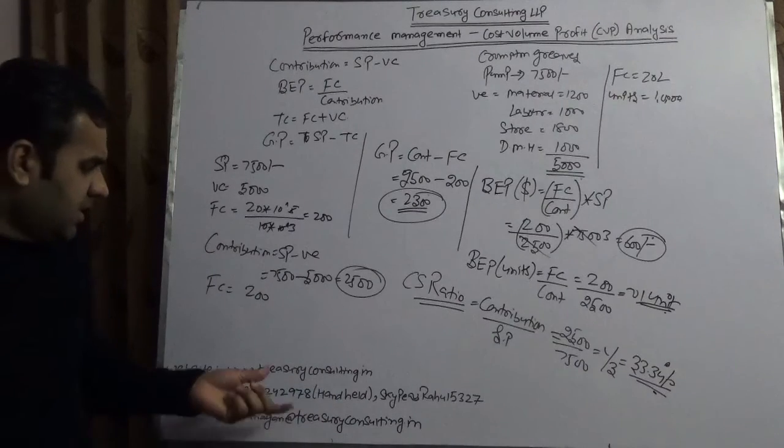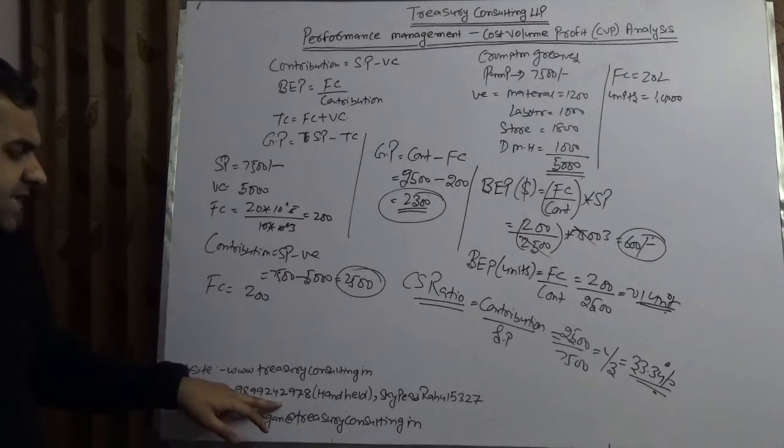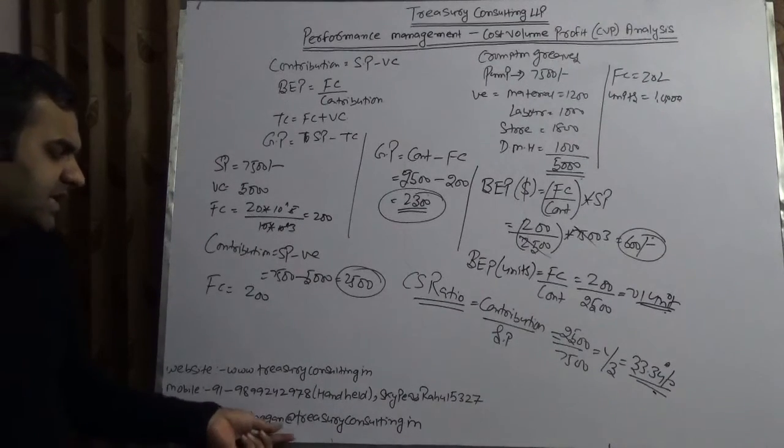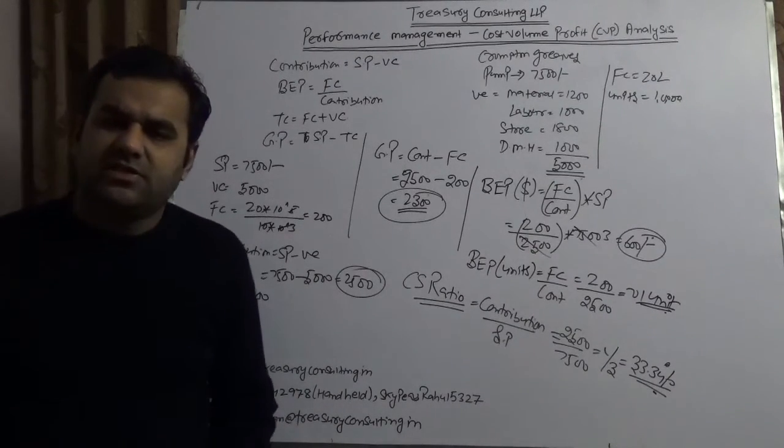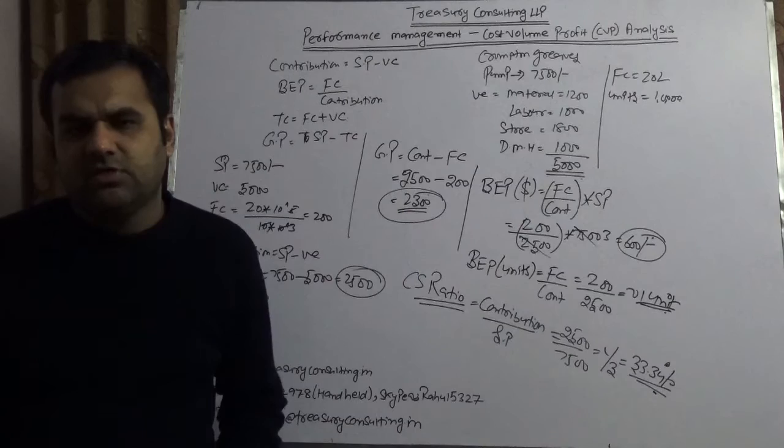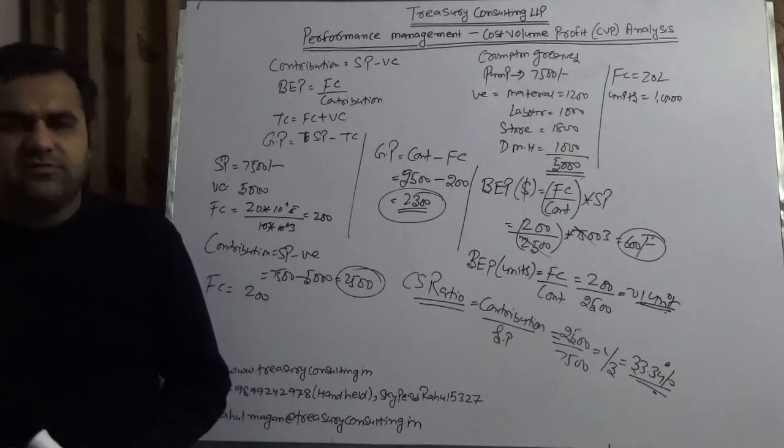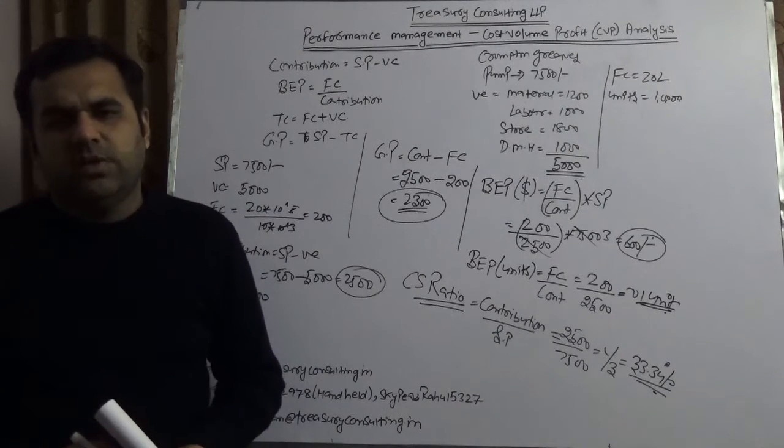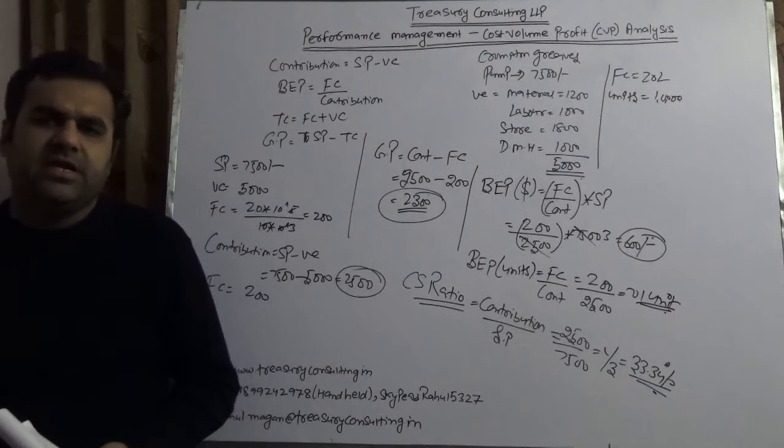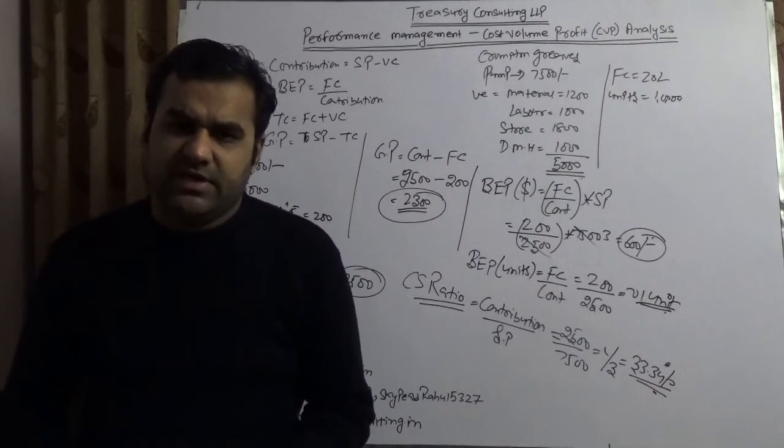Hope you like this video. Our website is www.treasuryconsulting.in. Our mobile number is 9899242978 and my Skype ID is rahul5327. My email is rahul.magan@treasuryconsulting.in. You are always welcome to give us a call. We are launching our newsletter with an expected date of roughly 3rd of February, and along with the newsletter, we will launch our corporate presentation. By 8th of February, we will be hitting the February 2017 version of our magazine. Thank you very much and have a great day ahead.